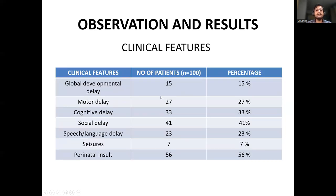Regarding clinical features: 15% had global developmental delay, 27% had motor delay, 33% had cognitive delay, 41% had social delay, 23% had speech or language delay, 7% had seizures, and 56% had perinatal insult.